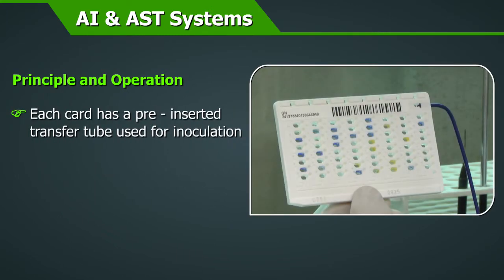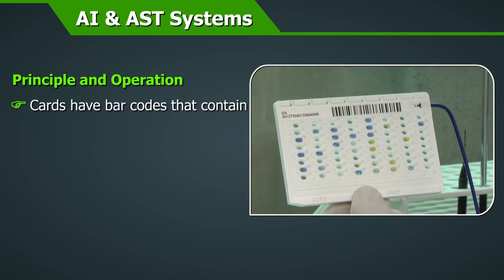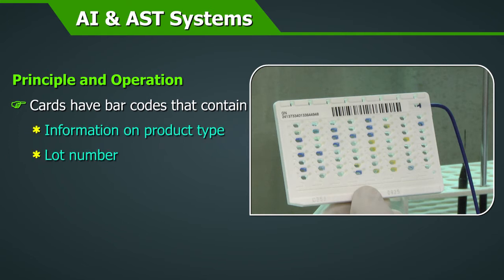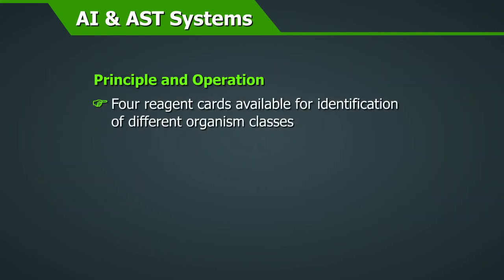Each card has a pre-inserted transfer tube used for inoculation. Cards have barcodes that contain information on product type, lot number, expiration date, and a unique identifier that can be linked to the sample either before or after loading the card into the system. There are currently four reagent cards available for the identification of different organism classes.